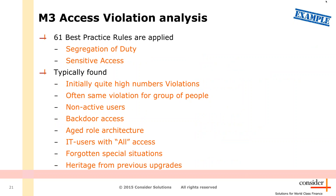What we typically find when we use Approver on the access control side of M3 is initially quite a high number of violations — which is logical, because there was no analysis, no monitoring before. So you will see all the history that ever was in there, assuming you are looking at multiple years of data. Often, what you see is that a whole group of people trigger the same violations, because they were set up in a certain way. Most of the time, the role architecture is a bit aged and is not completely in line with today's business.